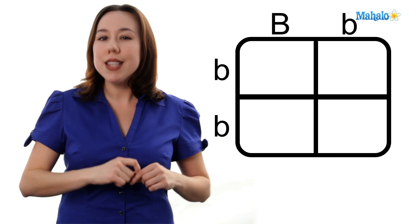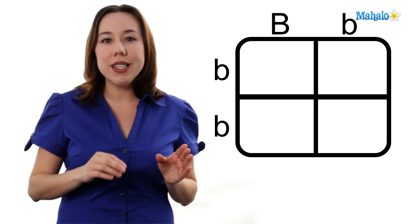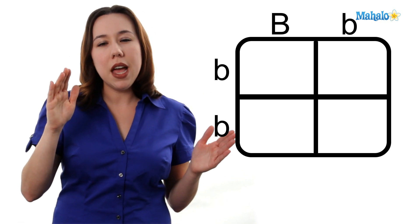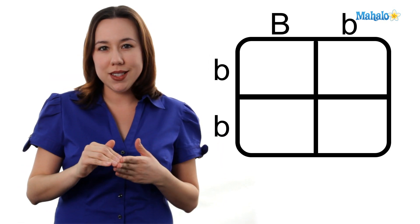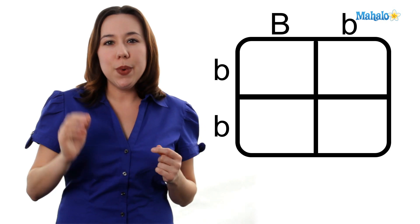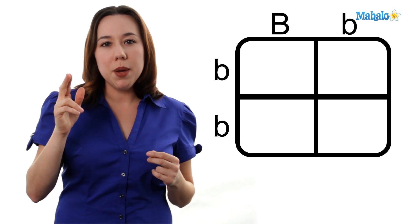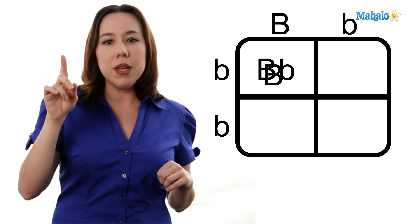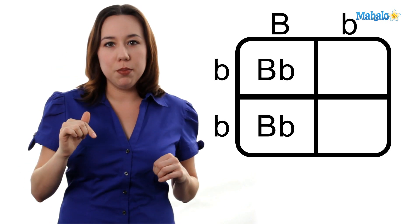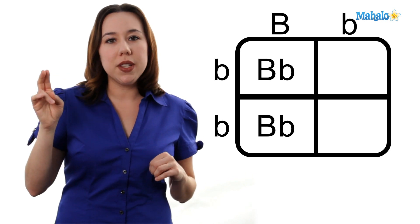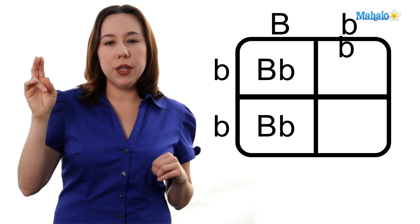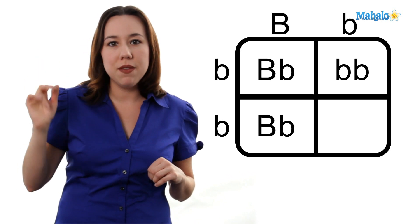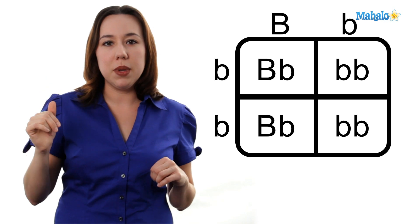Alrighty, it's time to do our cross. We're going to take one from the top and one from the left, and we're going to bring them down into those squares. We have on our top big B, little b. Then bring another big B, little b down. In our right square at the top, we have little b, little b. And our bottom right square, we have little b, little b.